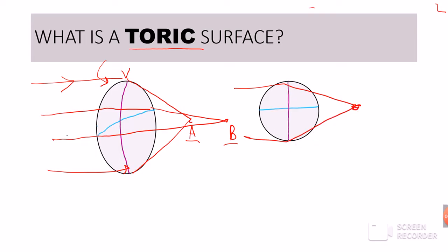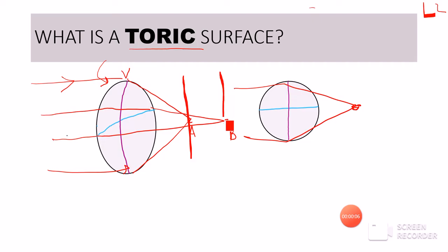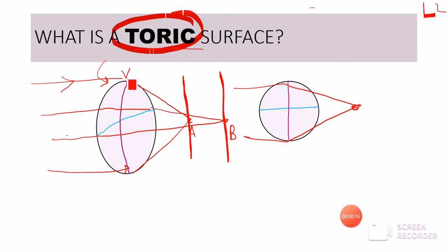Instead, we actually have two focal points. If we draw two planes, one passing through A and another through B, A and B will be two focal planes. In a toric surface, two meridians do not have equal power — one meridian has greater power compared to the other — because of which we have two focal points and two focal planes.